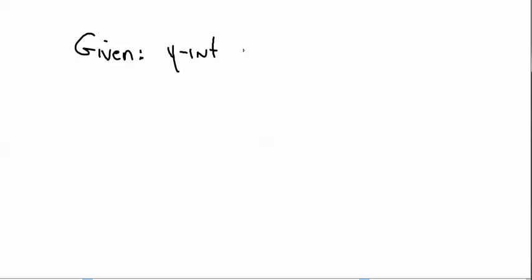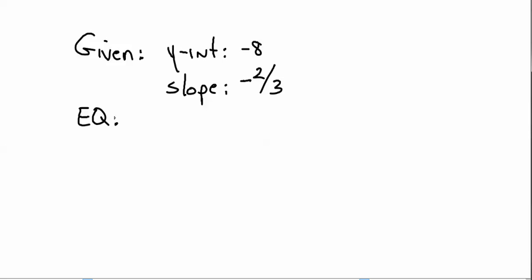So if you're given a y-intercept of negative 8 and the slope is negative 2 thirds, the equation for that line would be y equals negative 2 thirds x minus 8.